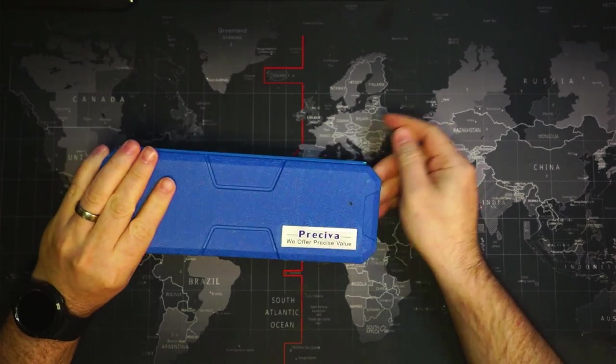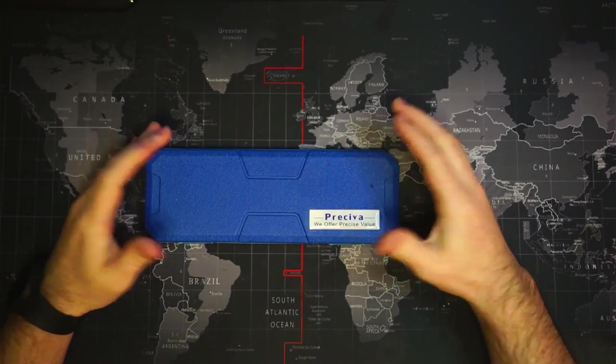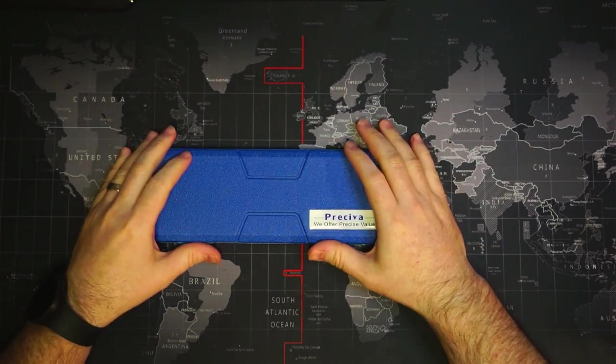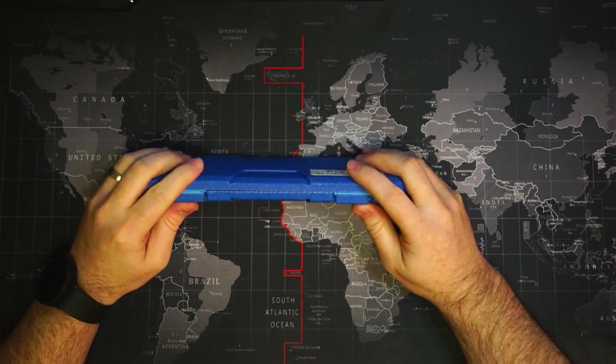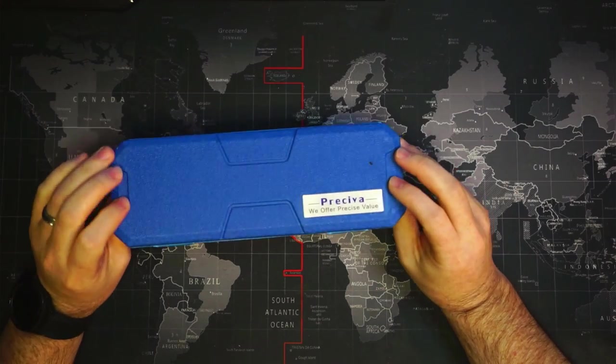They started measuring very weird measurements. A one centimeter measurement would display 0.54 of a millimeter. It was very strange.